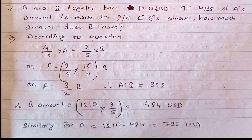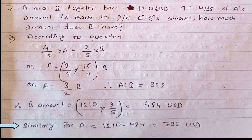We know the total ratio between A and B is 3 : 2 and the total amount is $1210. Since A and B are in ratio 3 : 2, the part of B is 2 and total parts are 3 + 2 = 5. Therefore B's amount = 1210 × (2/5) = $484. Similarly, A's amount = 1210 − 484 = $726, or equivalently 1210 × (3/5) = $726.